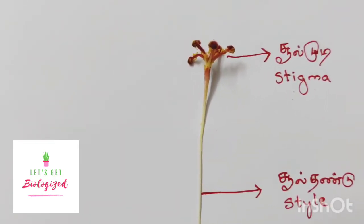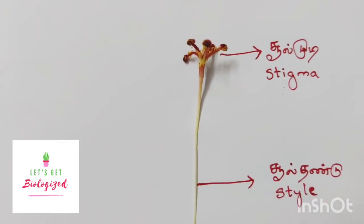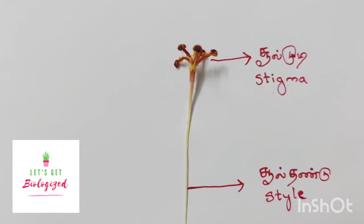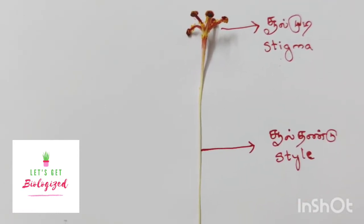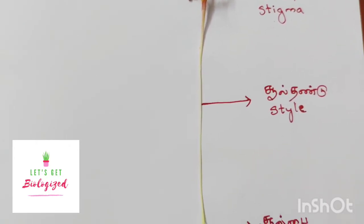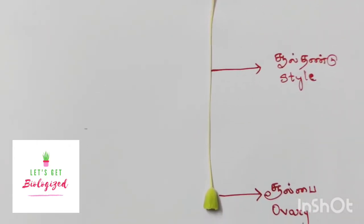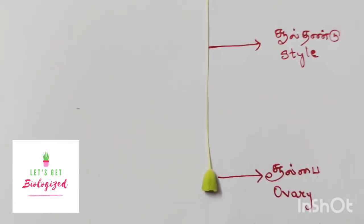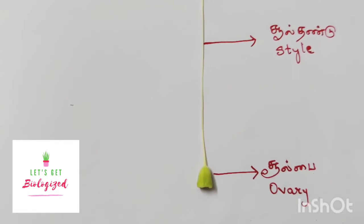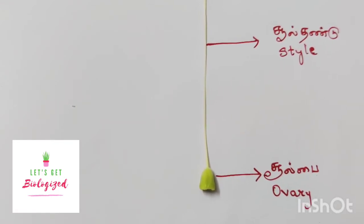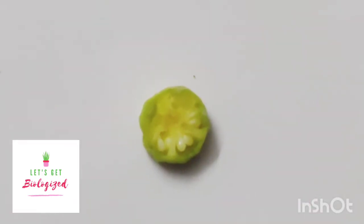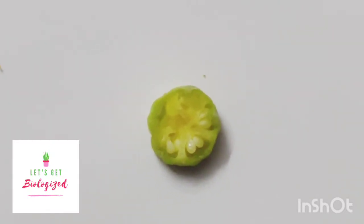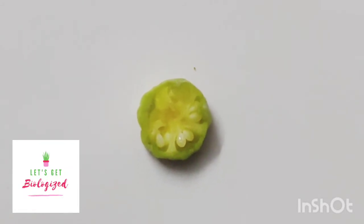Stigma is the place where pollen grains get attached. After getting attached, the pollen grains will give rise to a pollen tube, which will deliver the male gametes into the female gamete. Here we can see the ovary; within the ovary we have ovules, and inside the ovules we have the female gamete. If we take a cross-section of the ovary, we can see small bead-like structures — these are called ovules.